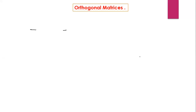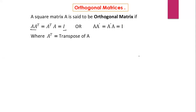First of all, what is an orthogonal matrix? A square matrix A is said to be an orthogonal matrix if A into A transpose is equal to A transpose into A, which is equal to the identity matrix. Here A transpose, also written as A dash, means the transpose of matrix A.